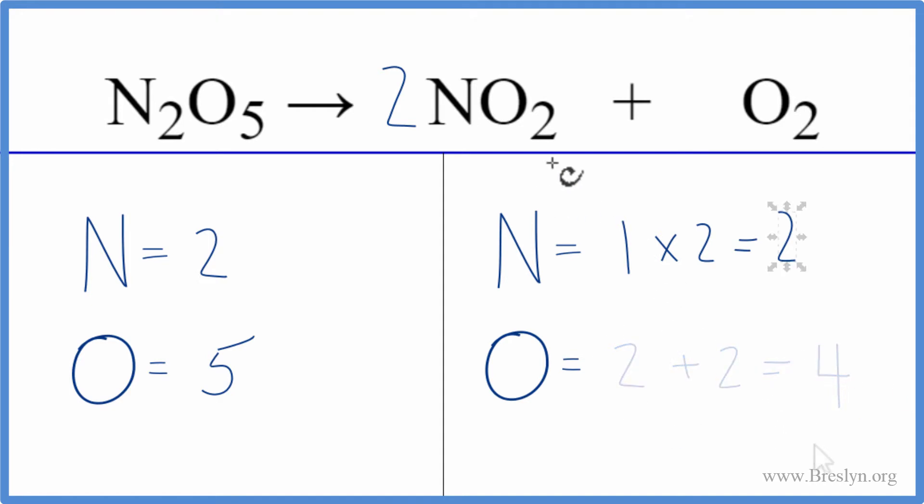Let's update our oxygens. We have two times two, that's four. Plus we have the two here. That gives us six. So we've got a bit of a problem here. Why don't we get this to an even number?